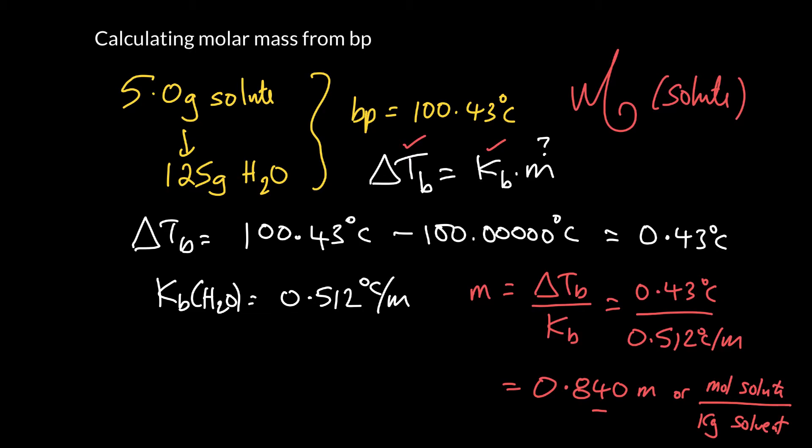Alright. So how does that help us calculate molar mass? Well, molar mass, if you remember, is the mass of one mole. And you can also think about it as the mass in grams divided by the moles in moles. So the chemical amount in moles. So if you just ratio mass to moles, you get molar mass.